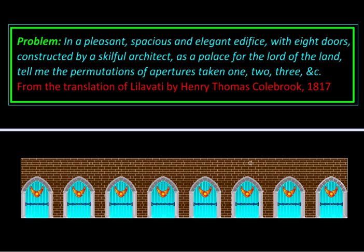So we have a building, a palace with eight doors, and we want to find out how many ways those doors can be kept open or closed. Clearly this is a combinatorics problem, and we will be dealing with combinations rather than permutations, because the order in which the doors are opened or entered or exited is of no consequence.